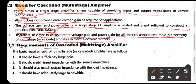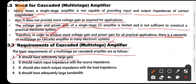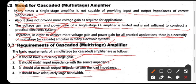The next point is the requirements of a cascade multi-stage amplifier. The basic requirements are as follows: it should have sufficiently large gain; it should match input impedance with the source impedance; it should match output impedance with the load impedance; and it should have an adequately large bandwidth.